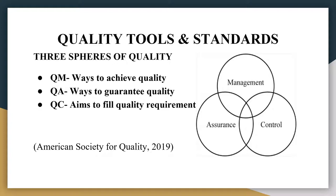Quality control really aims to fulfil the quality requirements. It is more of an inspection characteristic and it is reactive because you find the problems after they occur. Some of the activities may include process capability, developing and maintaining control charts, reducing process variability, and measuring process performance.